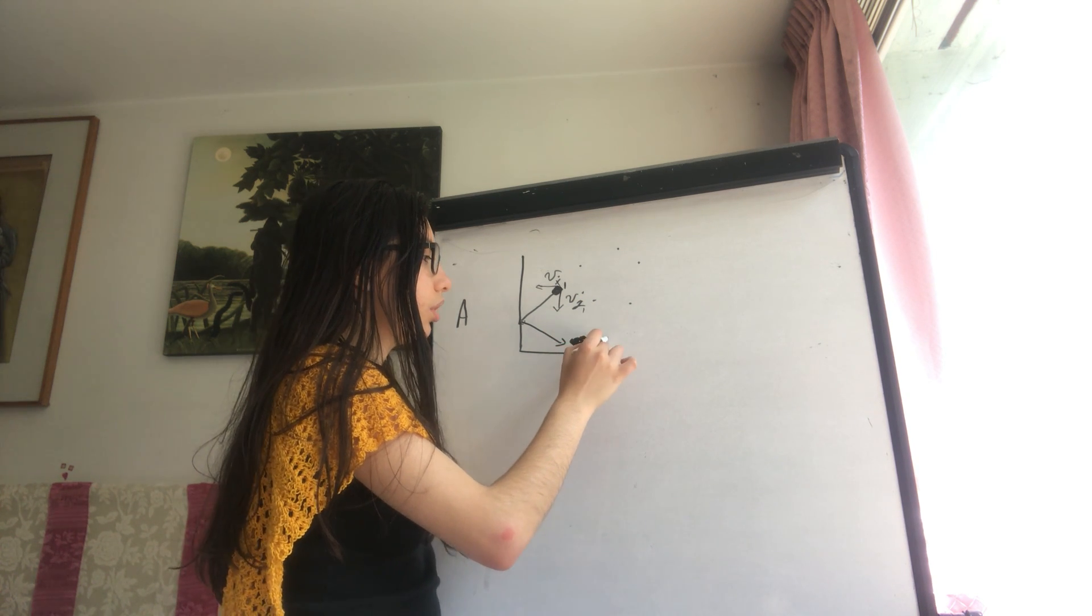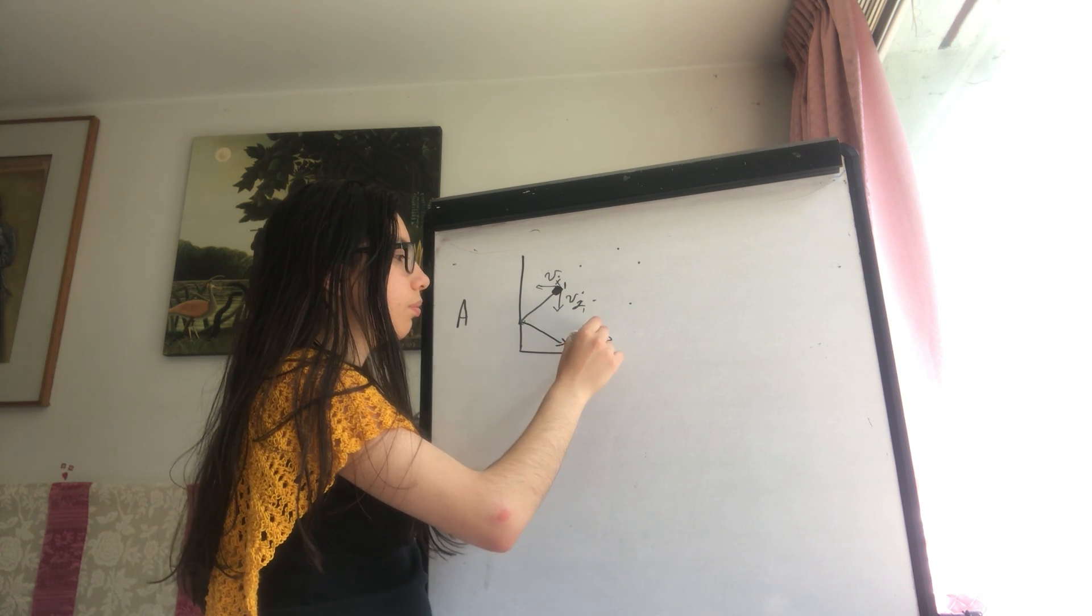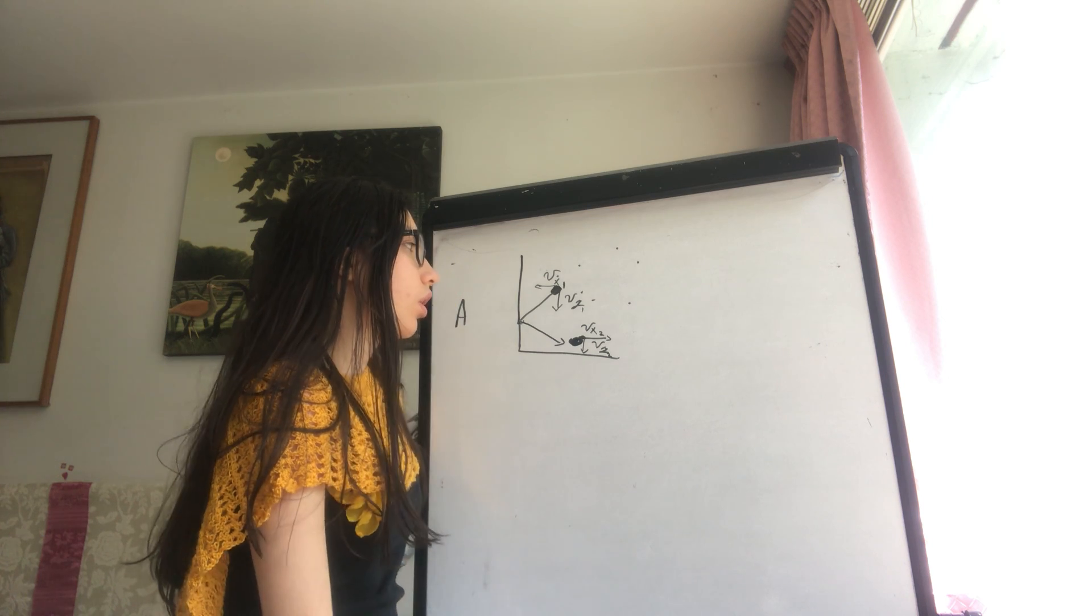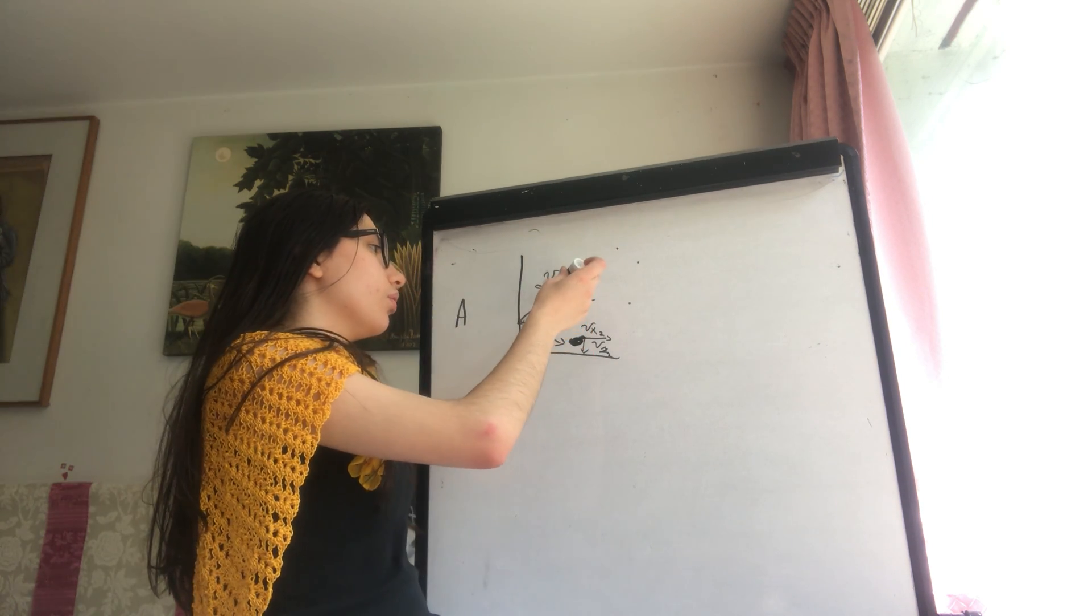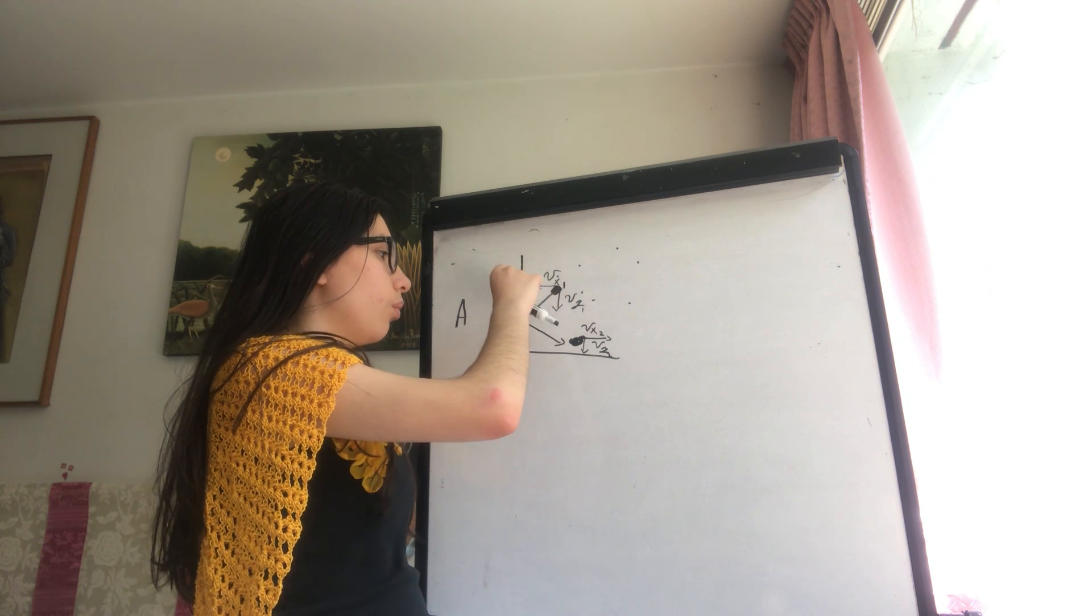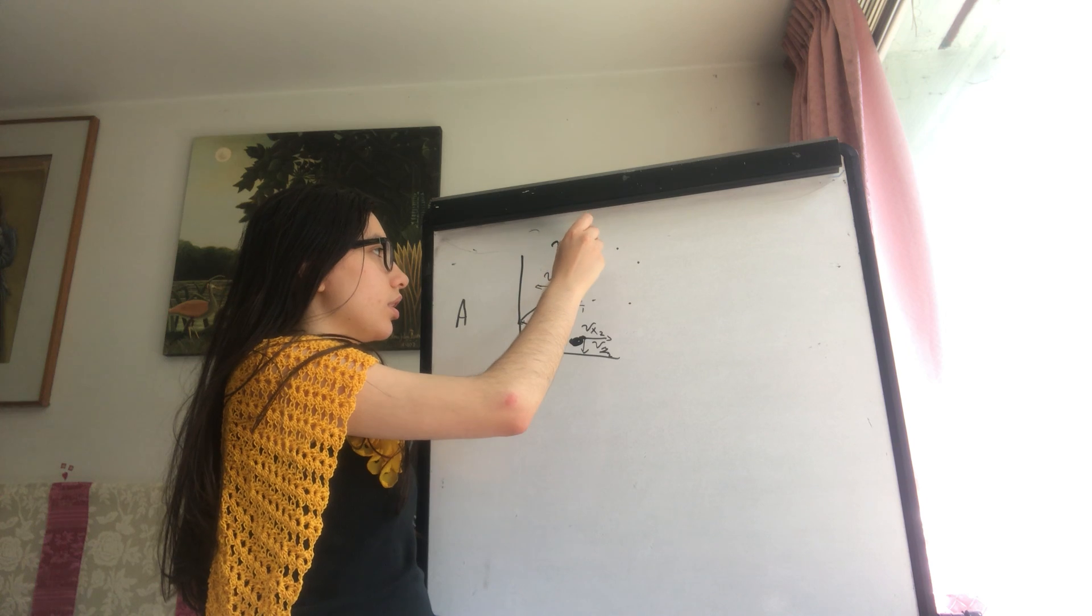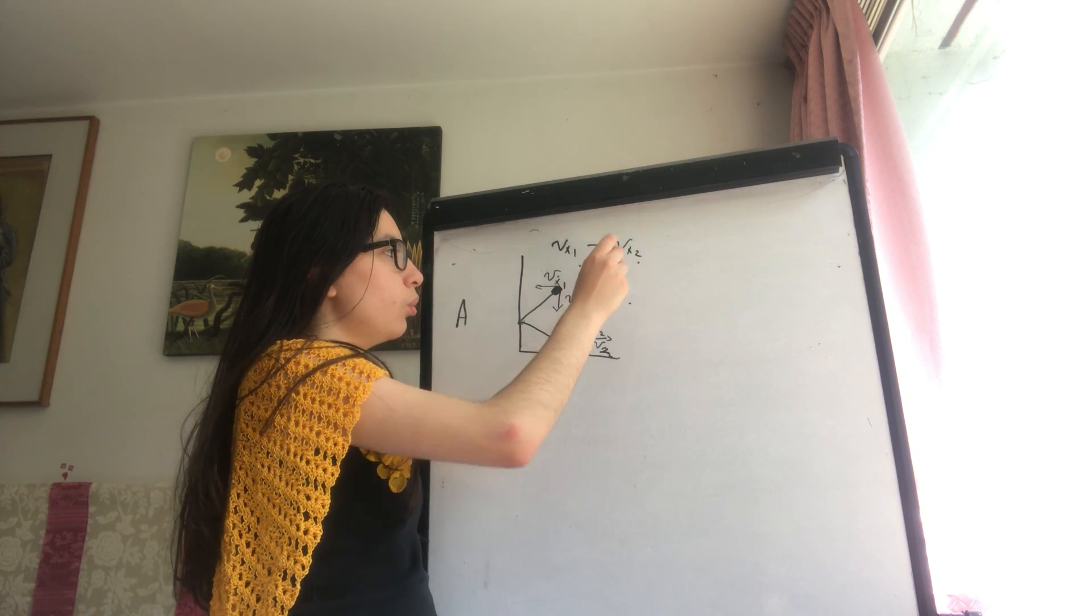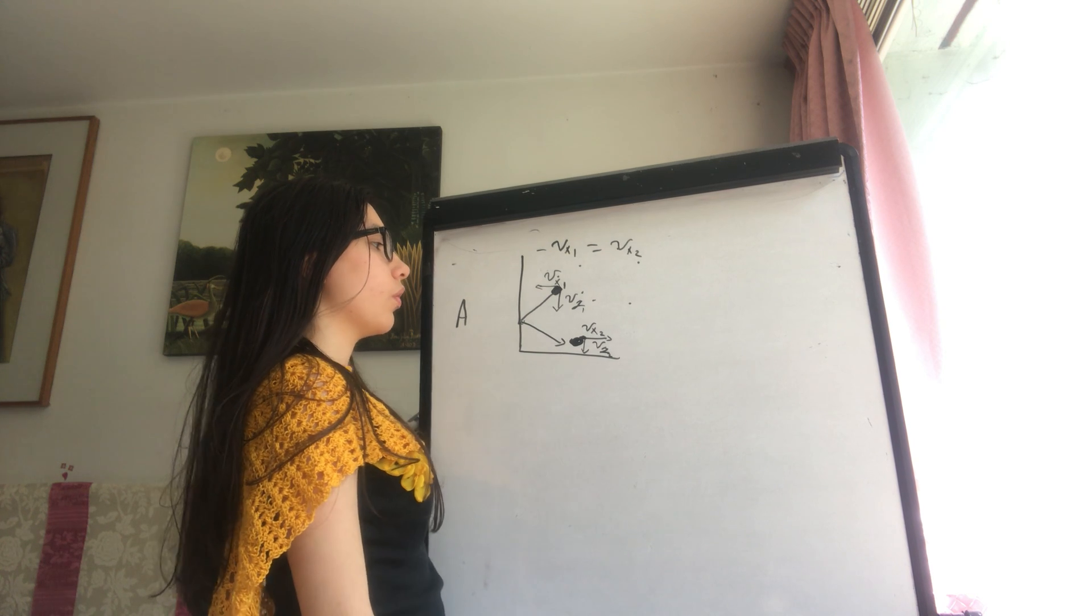This is called Vx sub 2. By Newton's third law, Vx1 is the same as Vx2, just with different signs.